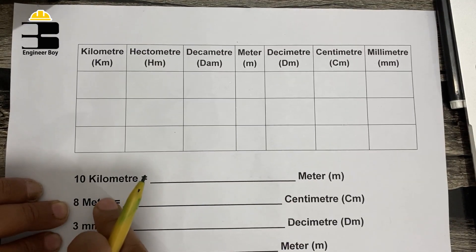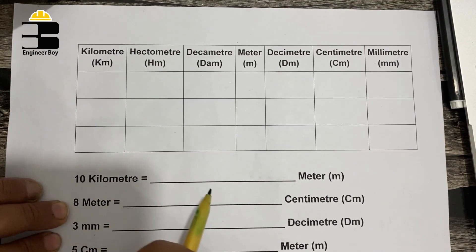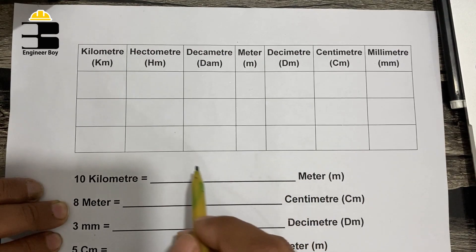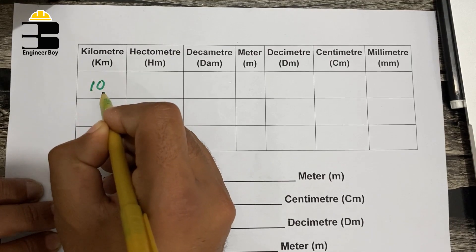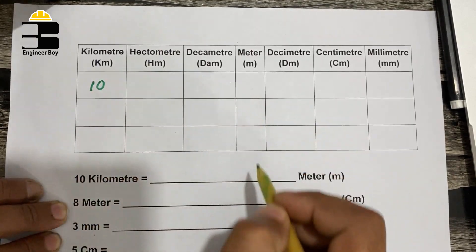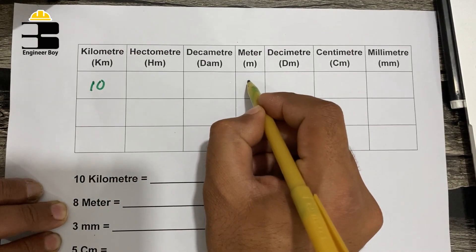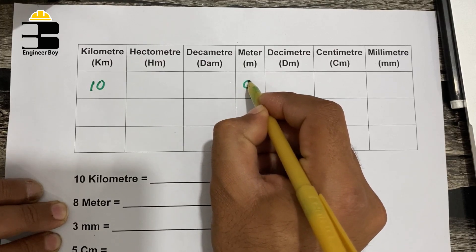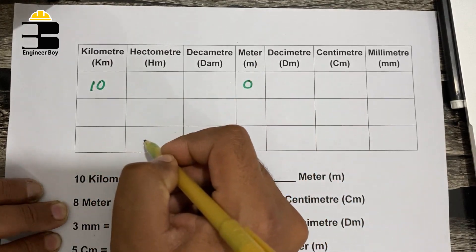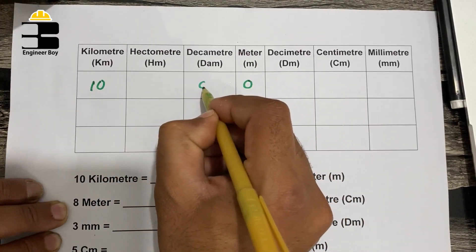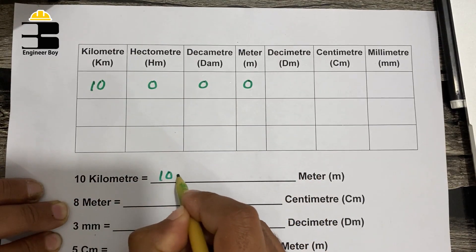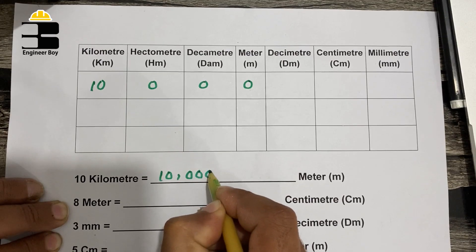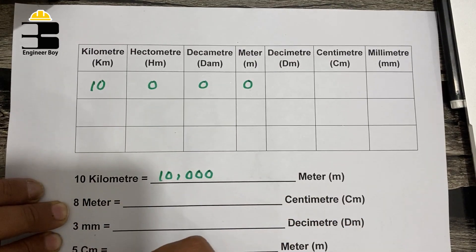Alright guys, just got this cute unit conversion table. Let me just convert 10 kilometers into meters. For that, I'm going to put 10 in the kilometers cell, and as we are converting that into meters, I'm going to put zero in the cell of meters. Now let's just fill the other remaining cells with zero. That means we got 10,000 meters in 10 kilometers.